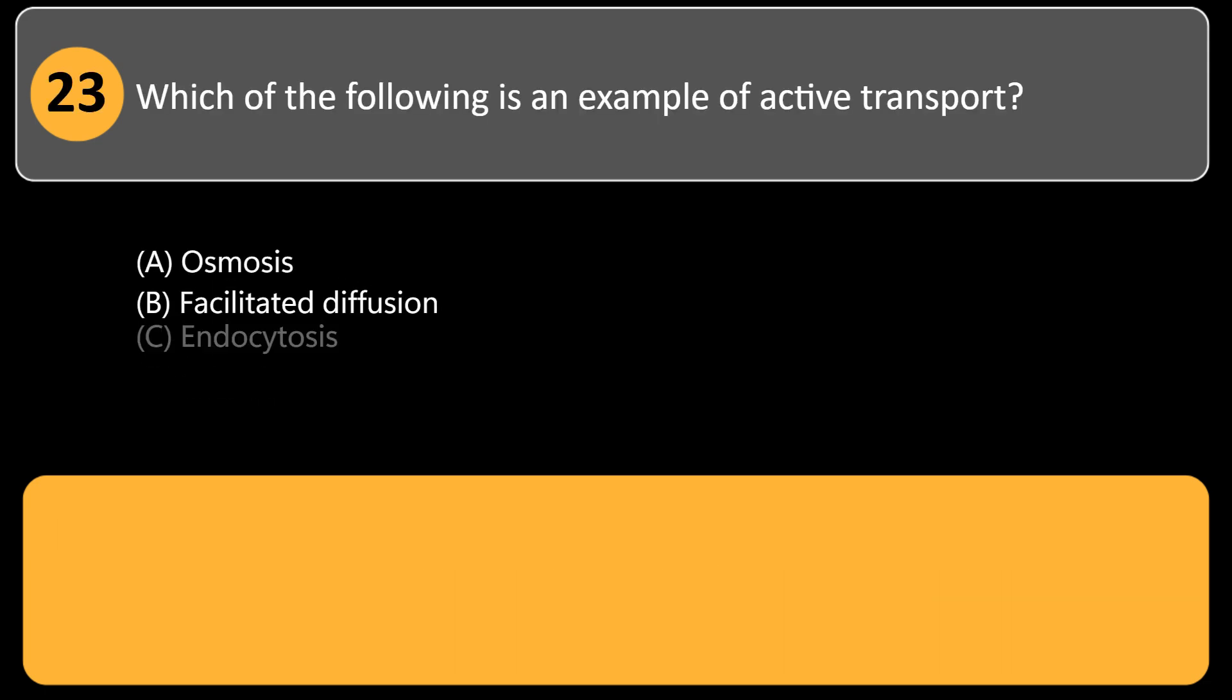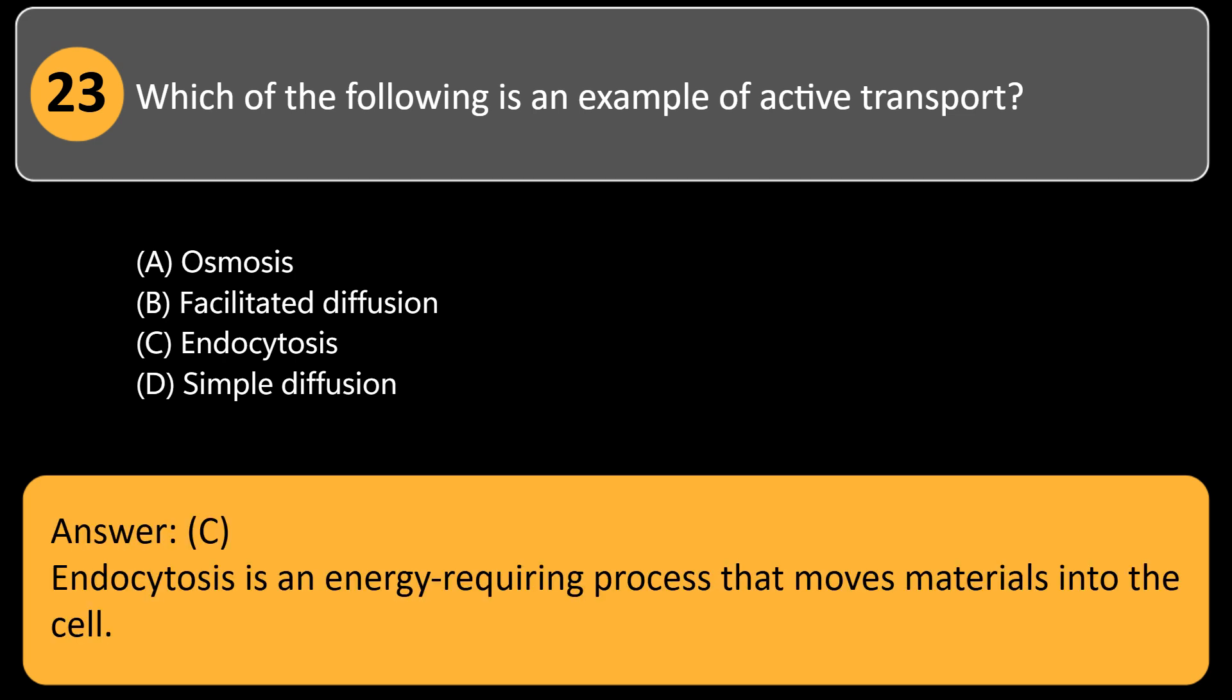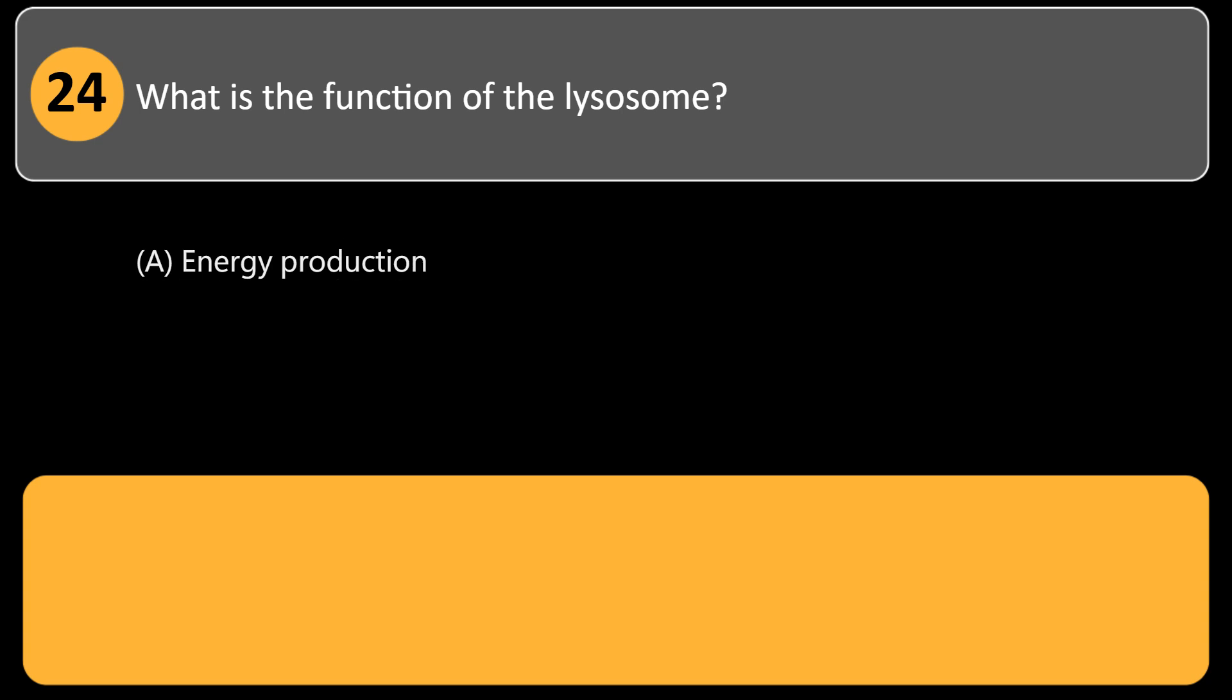Which of the following is an example of active transport? A. Osmosis, B. Facilitated diffusion, C. Endocytosis, D. Simple diffusion. Answer: C. Endocytosis is an energy-requiring process that moves materials into the cell.